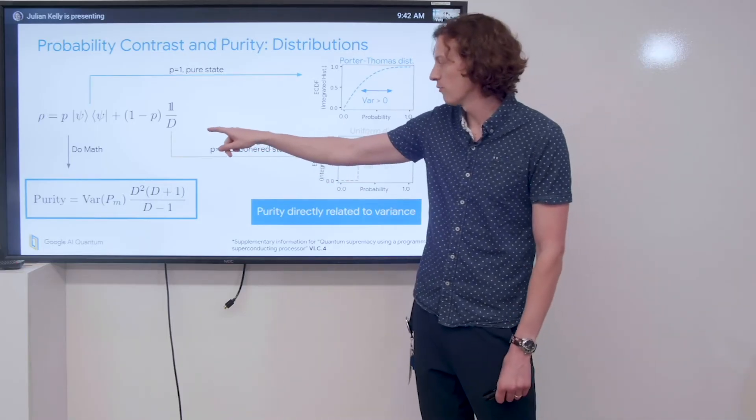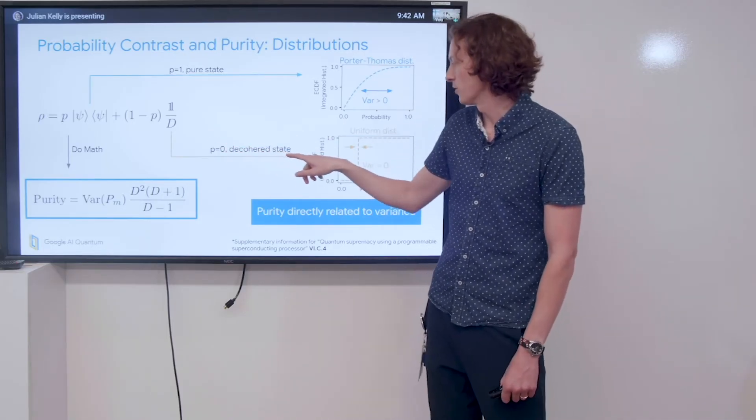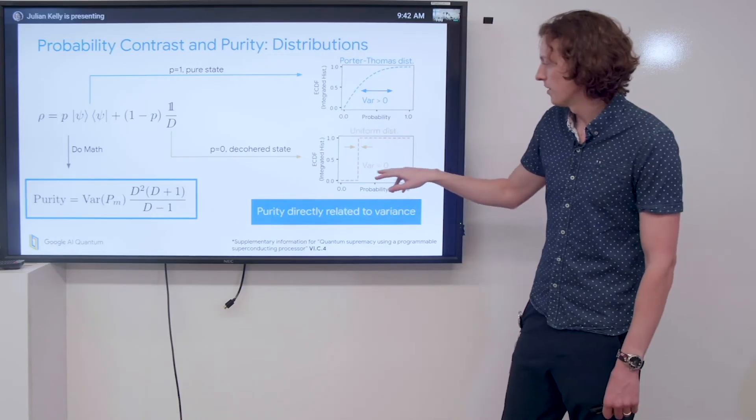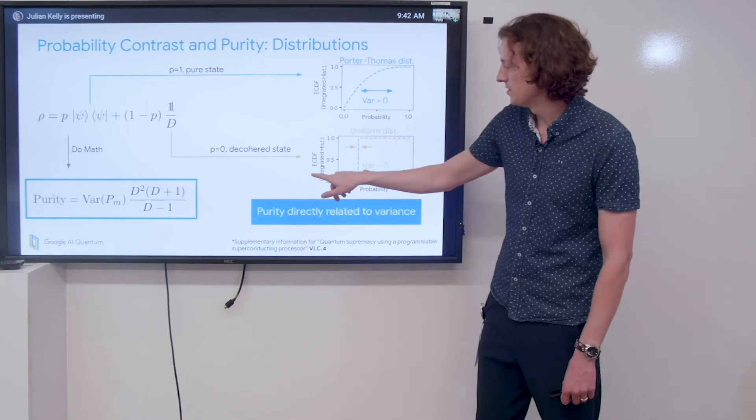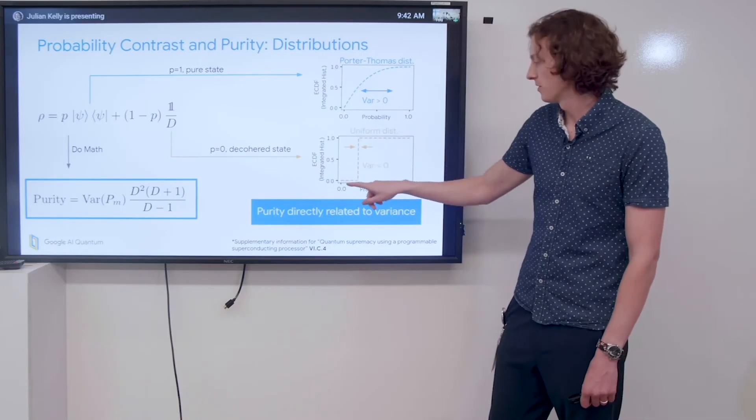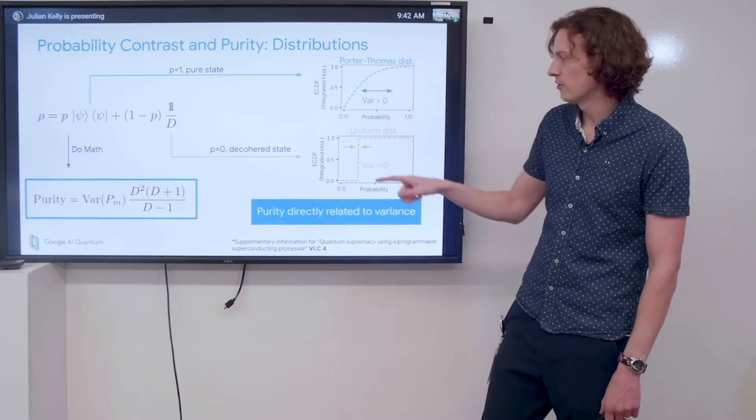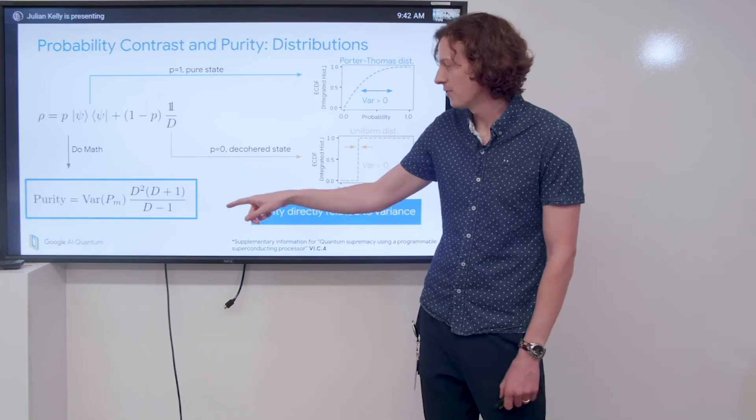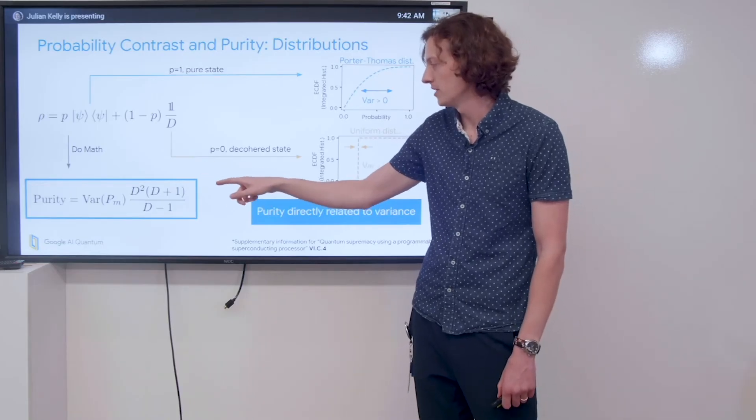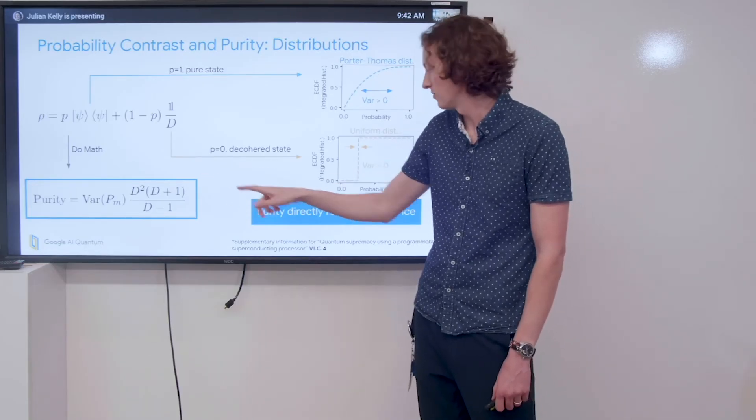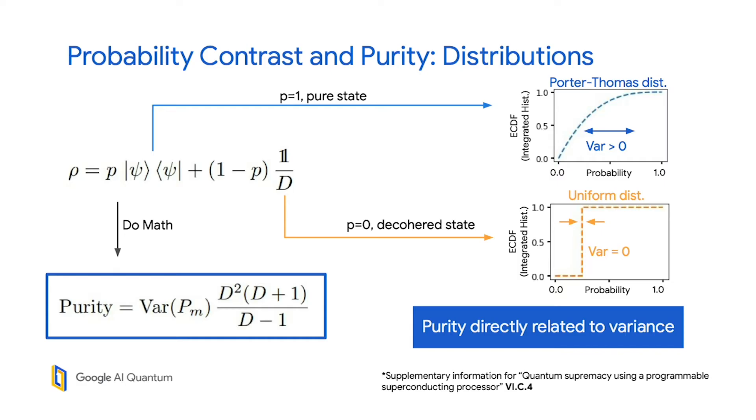However, if we're measuring probabilities from the uniform distribution, which corresponds to a decohered state, we see that there's no variance at all. This is an ECDF or integrated histogram corresponding to a delta function with no variance. It turns out if you do the math, you can directly relate the purity to the variance of the probability distributions times some dimension factors. The point is that we can directly relate purity to variance experimentally from measured probabilities.